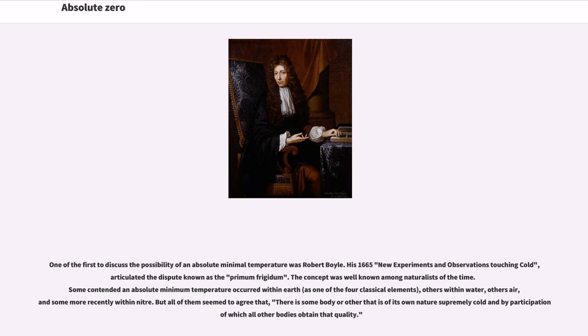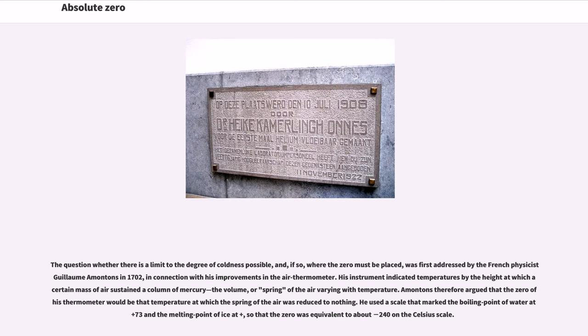One of the first to discuss the possibility of an absolute minimal temperature was Robert Boyle. His 1665 New Experiments and Observations Touching Cold articulated the dispute known as the primum frigidum. The concept was well known among naturalists of the time. Some contended an absolute minimum temperature occurred within earth, as one of the four classical elements, others within water, others air, and some more recently within niter. But all of them seem to agree that there is some body or other that is of its own nature supremely cold and by participation of which all other bodies obtain that quality. The question whether there is a limit to the degree of coldness possible, and, if so, where the zero must be placed...